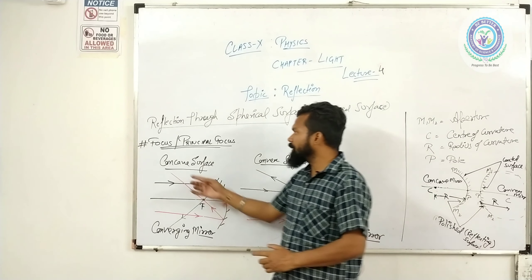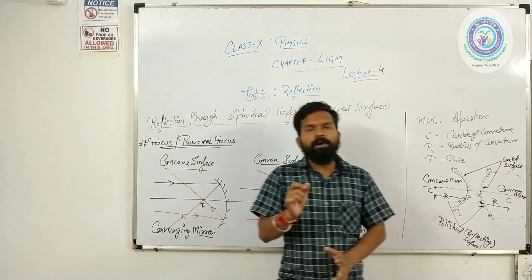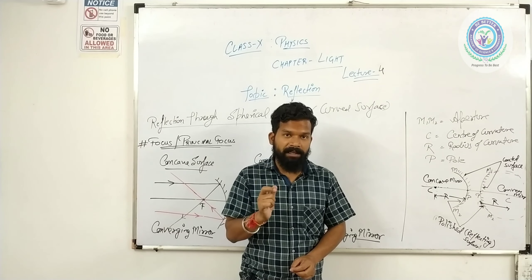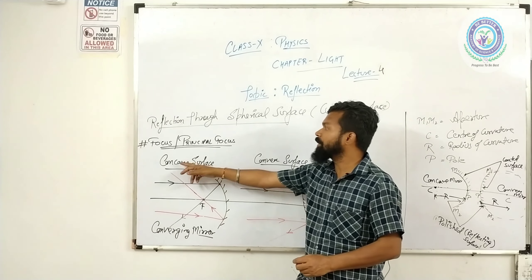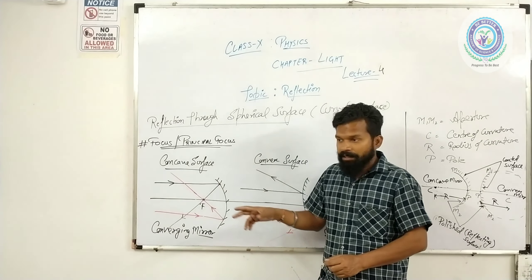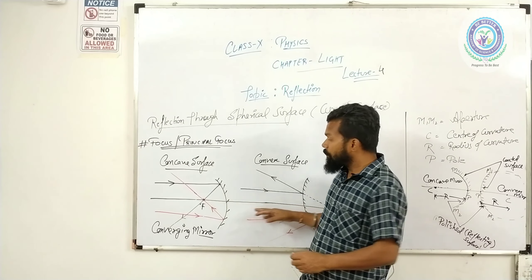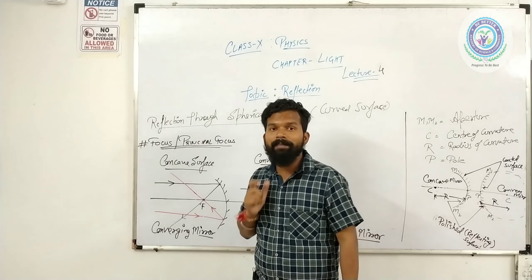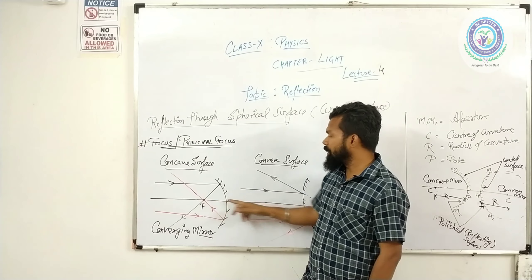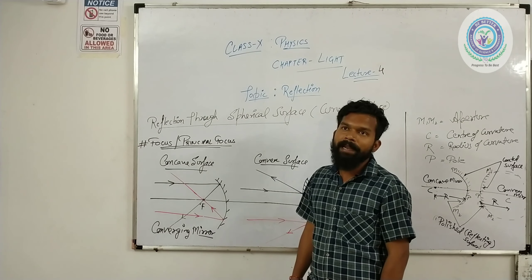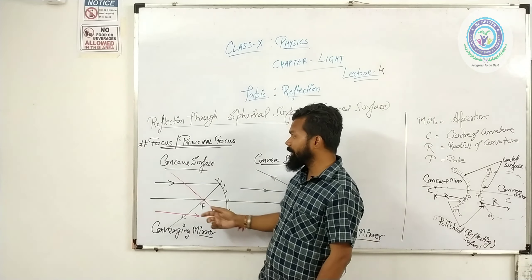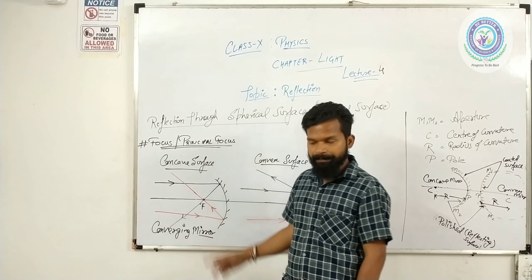तो हम पहले देखते हैं concave surface के लिए। Focus वो point होता है जिस point पे reflection के बाद light rays actual में meet करती हैं। Principal focus or focus of a concave surface is that point at which, after reflection, reflected rays actually meet. यह focus lie करता है principal axis पे — principal axis का वो point जिस point पे reflection के बाद reflected rays actual में meet करेंगी, उसे हम principal focus या simply focus बोलते हैं।